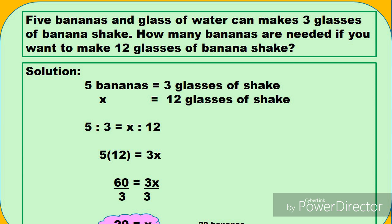Let's start with number one problem. Five bananas in glass of water can make three glasses of banana shake. How many bananas are needed if you want to make 12 glasses of banana shake? So five bananas equals three glasses of shake. We don't know the number of bananas, so we put an X equals 12 glasses of shake.